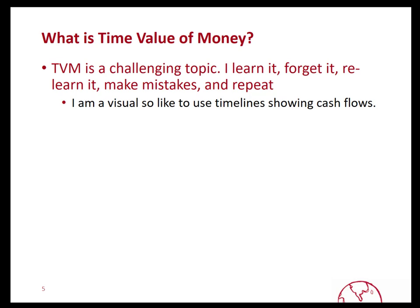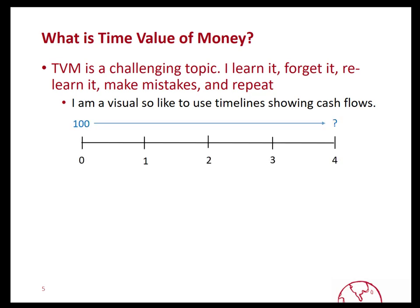What I typically do, because I'm a visual learner, is I like to draw out cash timelines that show the cash flows, such as this. Here we can see an investment of $100 made today which grows for four periods — could be four years, four months, could be four quarters. We're just going to call them periods, and we want to know what the future value is.